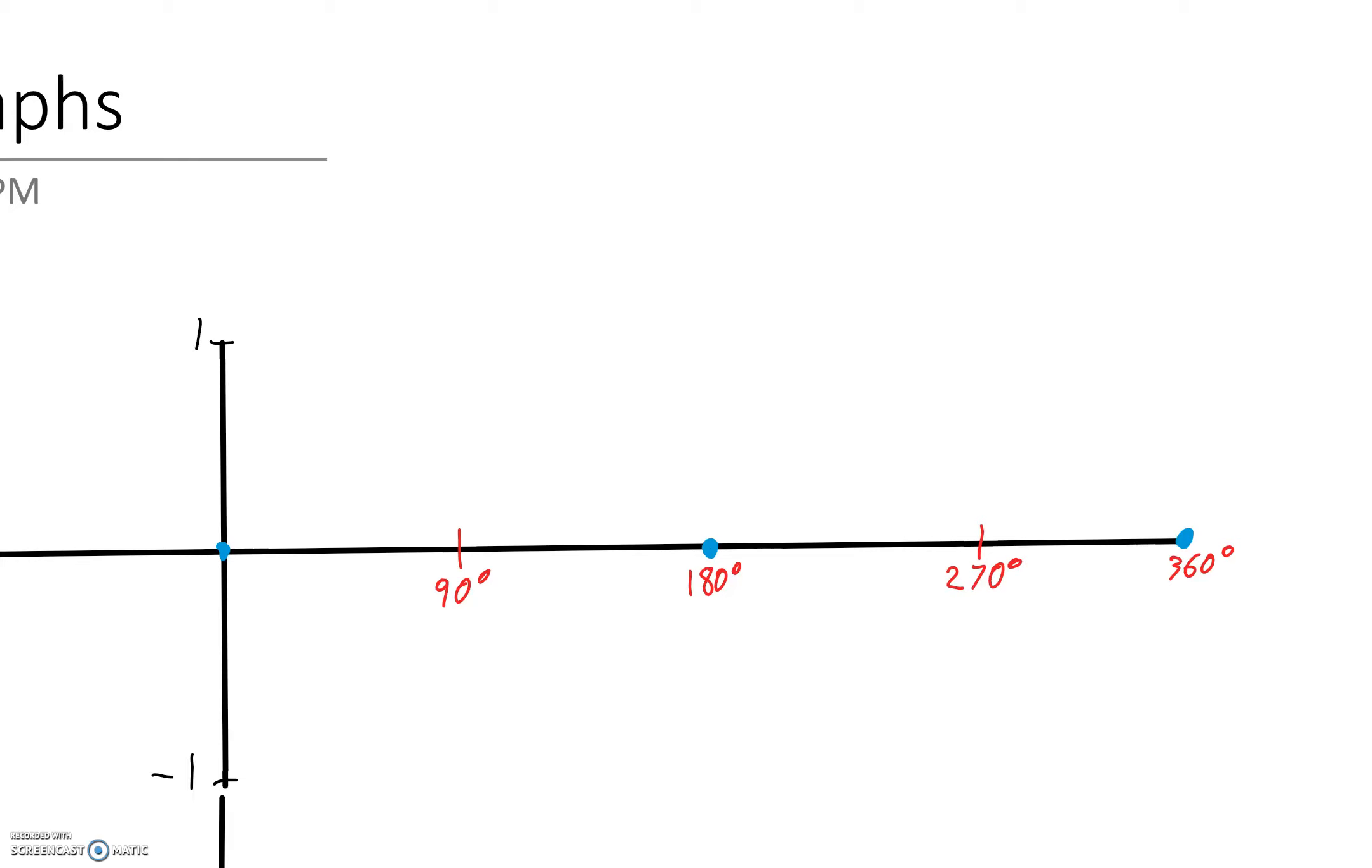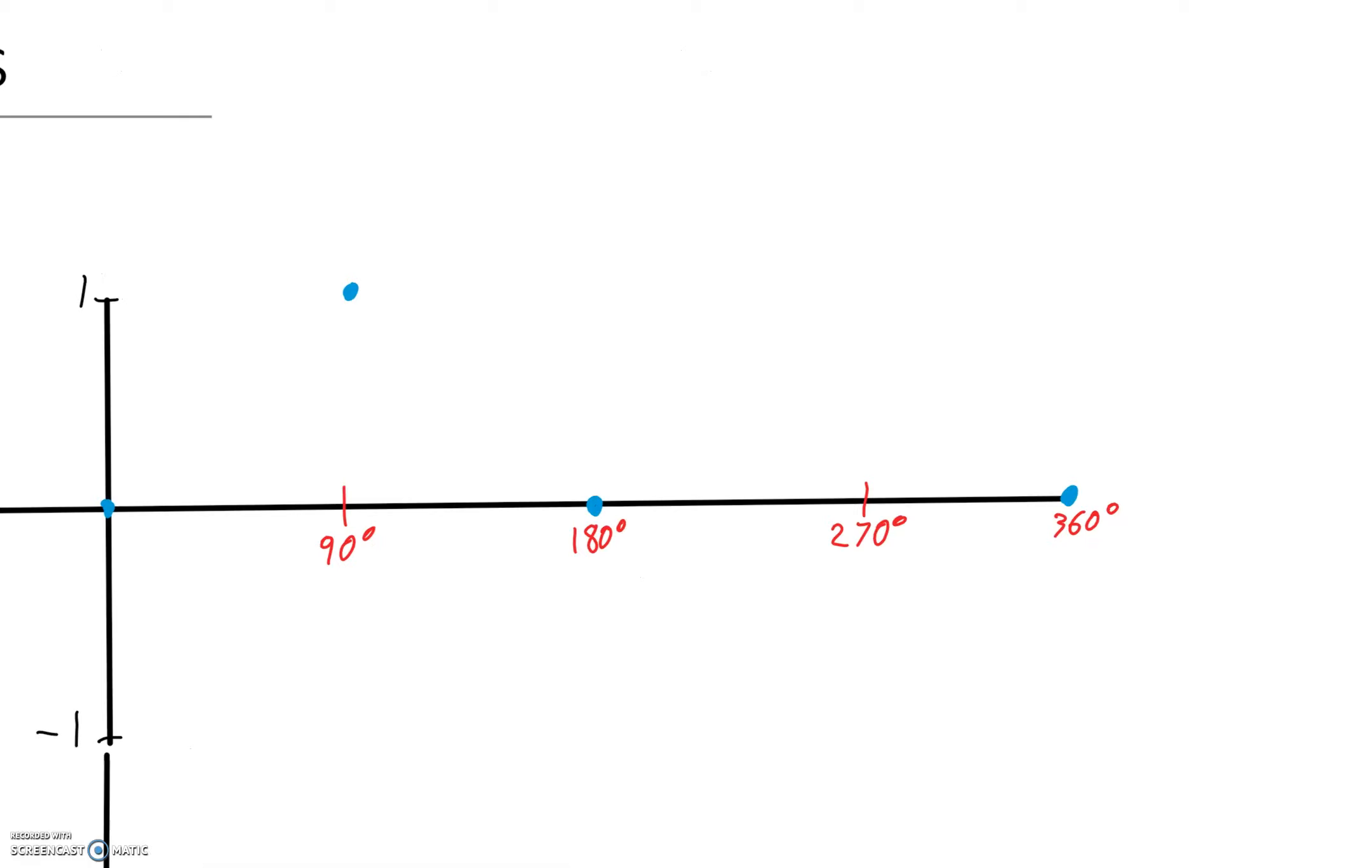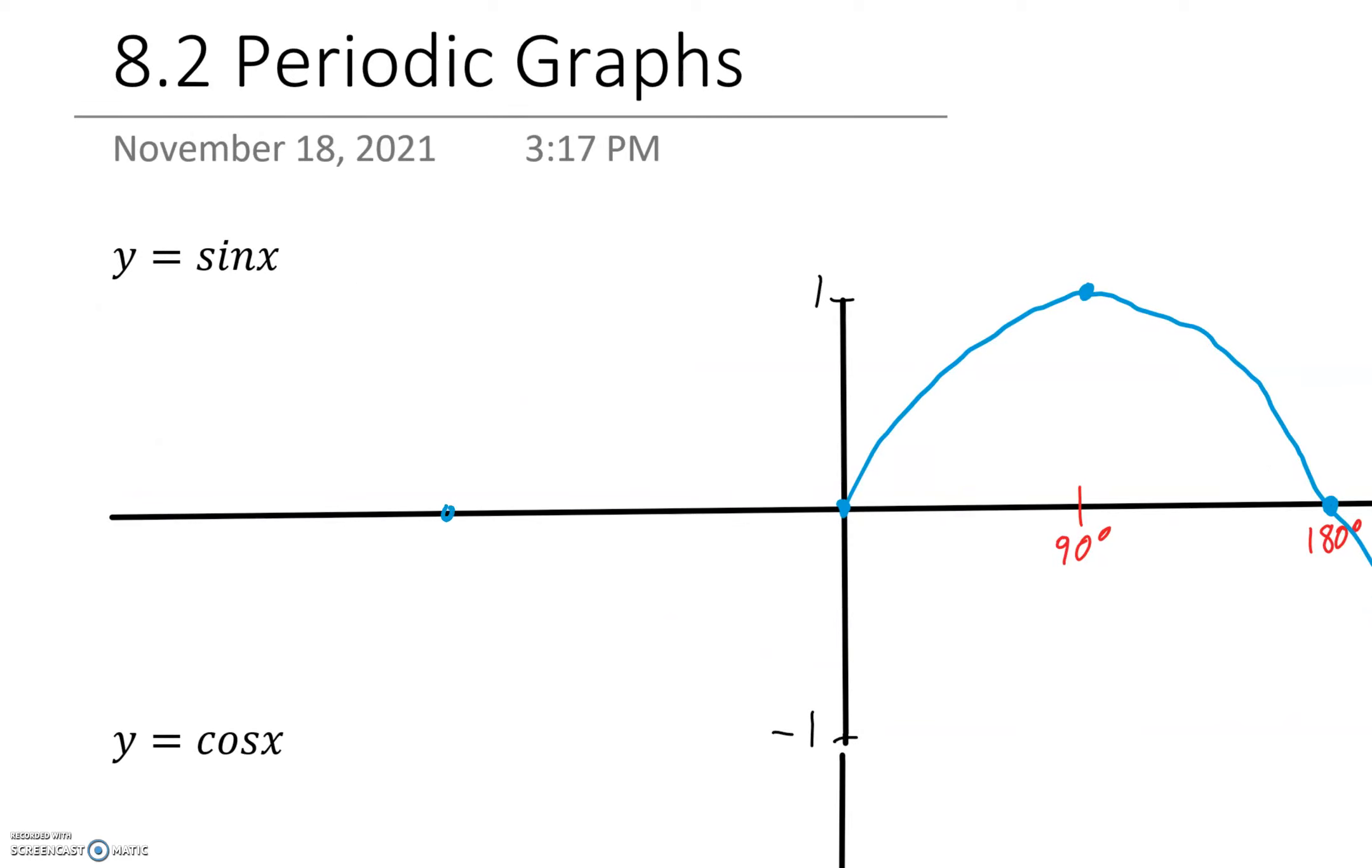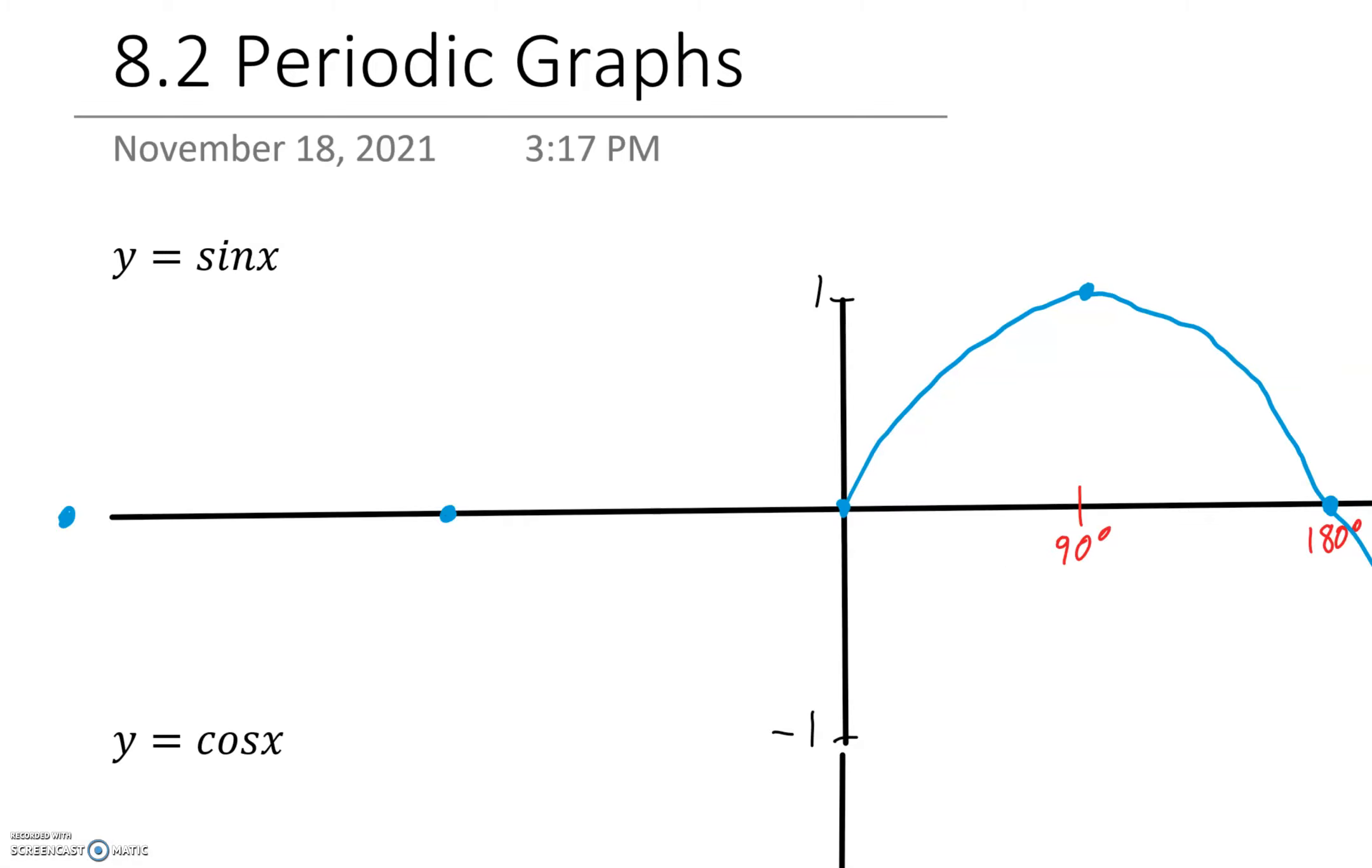We're also going to go in the negatives in a moment, but let's just try this out first. At 90 degrees, it's going to be at its maximum, so at 1. At 270, it's going to be at its minimum, which is down here at negative 1. And so you can imagine that it'll make some sort of curve like this. And this is what we call a sine function. So let's continue it on towards the left-hand side as well.